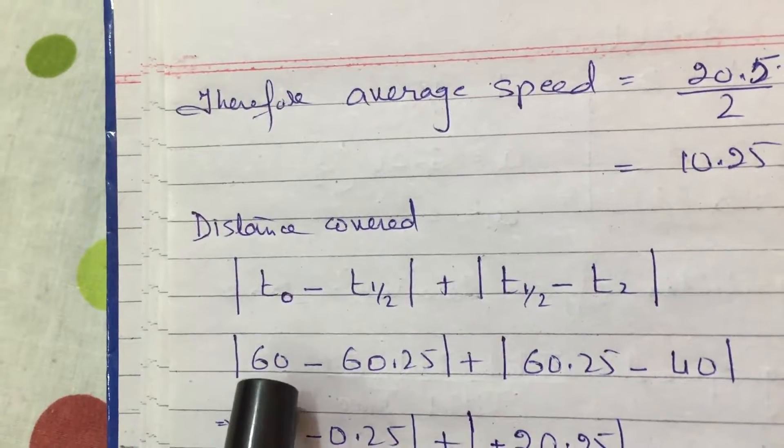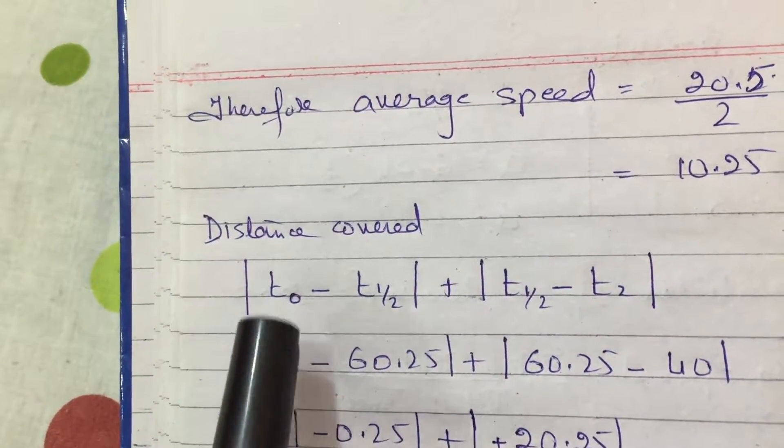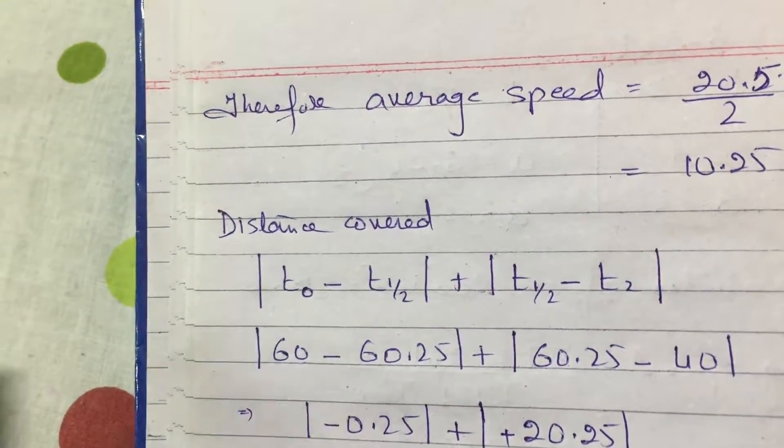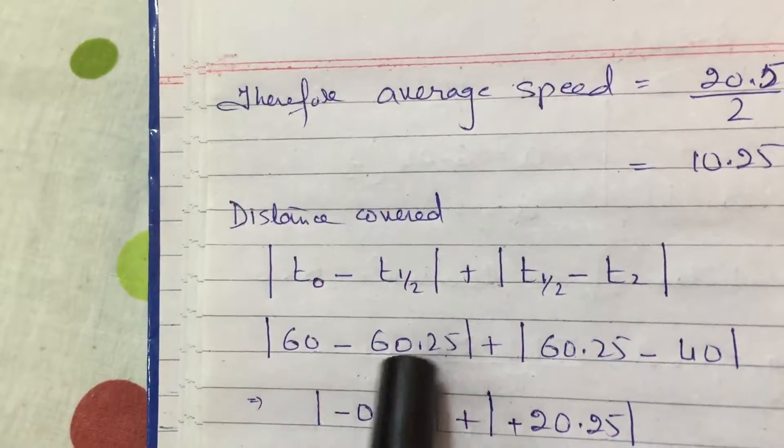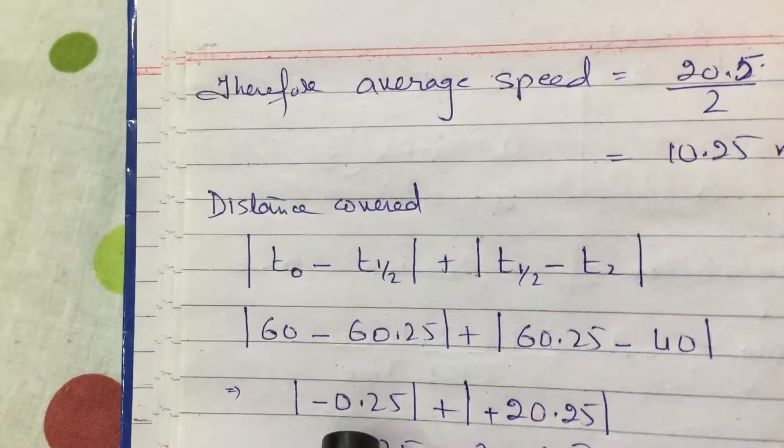If I calculate the distance covered in 0 seconds till half second, how? By substituting 0 in the displacement equation I got 60. I have just shown before. And t equals half second, when I subtract it I got 0.25.